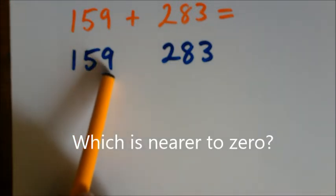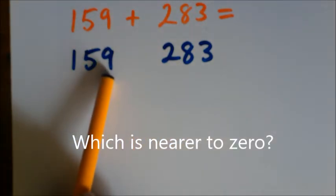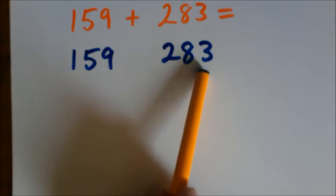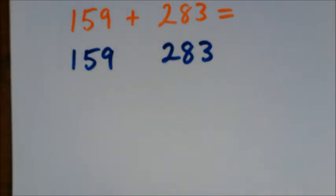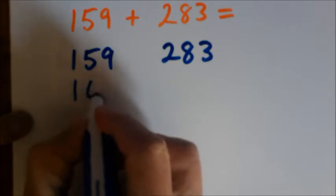And the answer is the nine. The nine is nearer to zero than the three. The nine is just one away from zero if we round that up. The three is three away from zero if we round it down. So we choose the nine because it's nearest. We round it up. That means we round 159 up to 160.